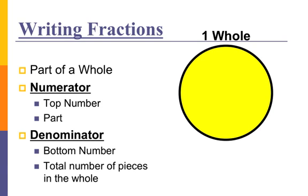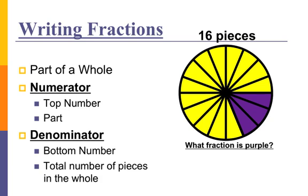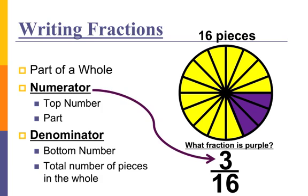Here's another example. I've got one whole broken up this time into 16 pieces, and I'll shade a certain number. My first question is: what fraction is purple? I've got 16 total pieces, three of which are purple. So that fraction is three sixteenths. Three is my numerator because that tells me the part which is purple. And 16 is my denominator because that tells me how many total pieces are in the whole. So my fraction is three sixteenths to represent the amount of the circle that's purple.